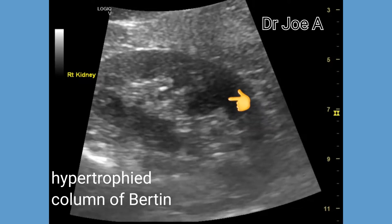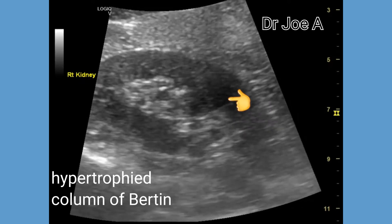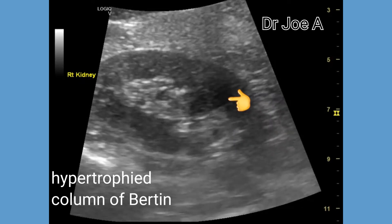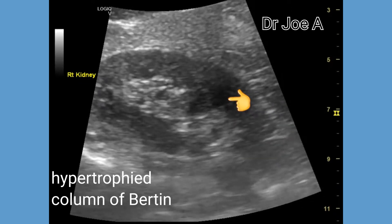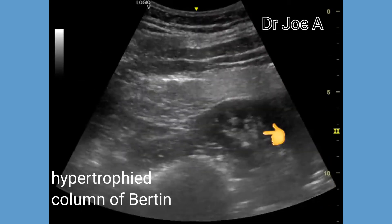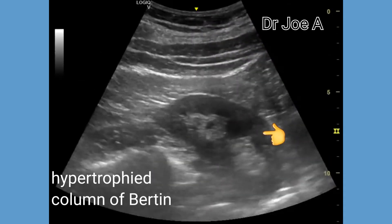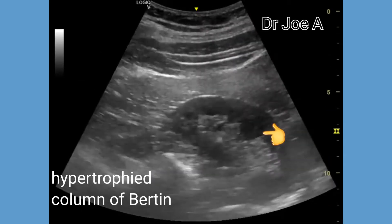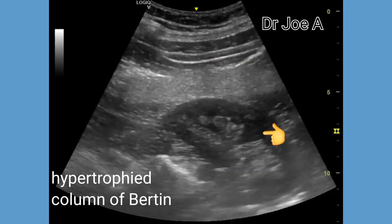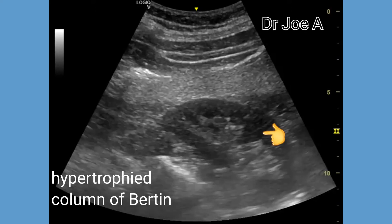The hypertrophied column of Bertin in this case is seen bulging between the renal pyramids into the renal sinus. This is a normal variant.